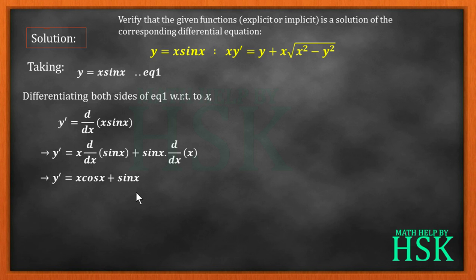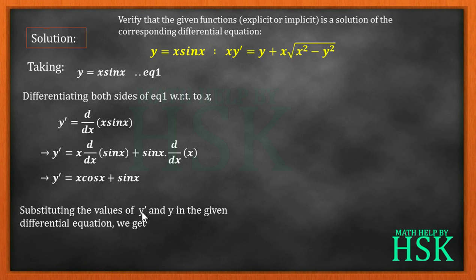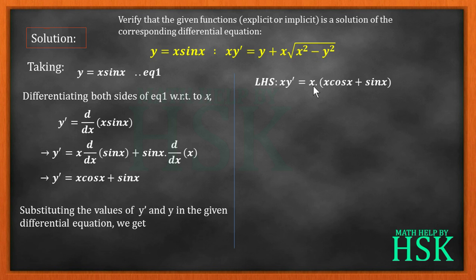Substituting the values of y' and y into the left-hand side of the differential equation, we get: xy' = x(x cos x + sin x), which simplifies to x² cos x + x sin x.